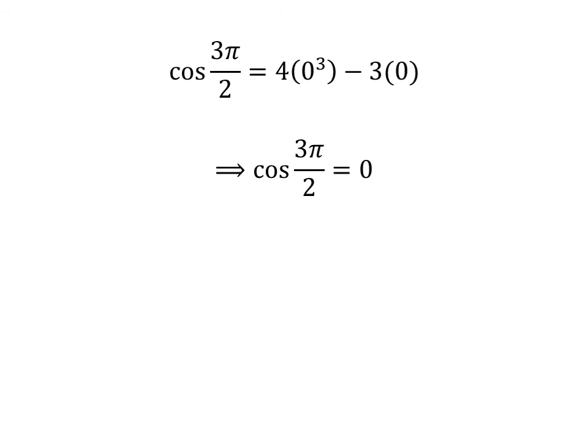4(0³) - 3(0) equals 0. So, cos(3π/2) = 0.